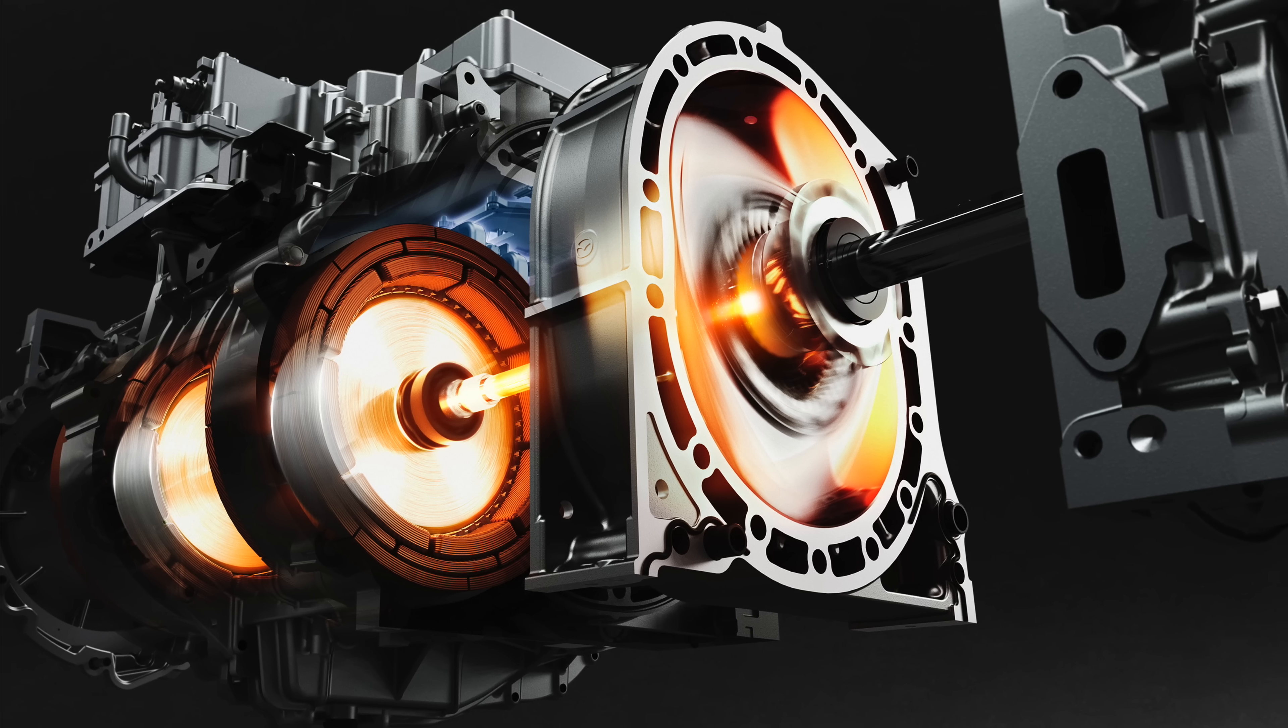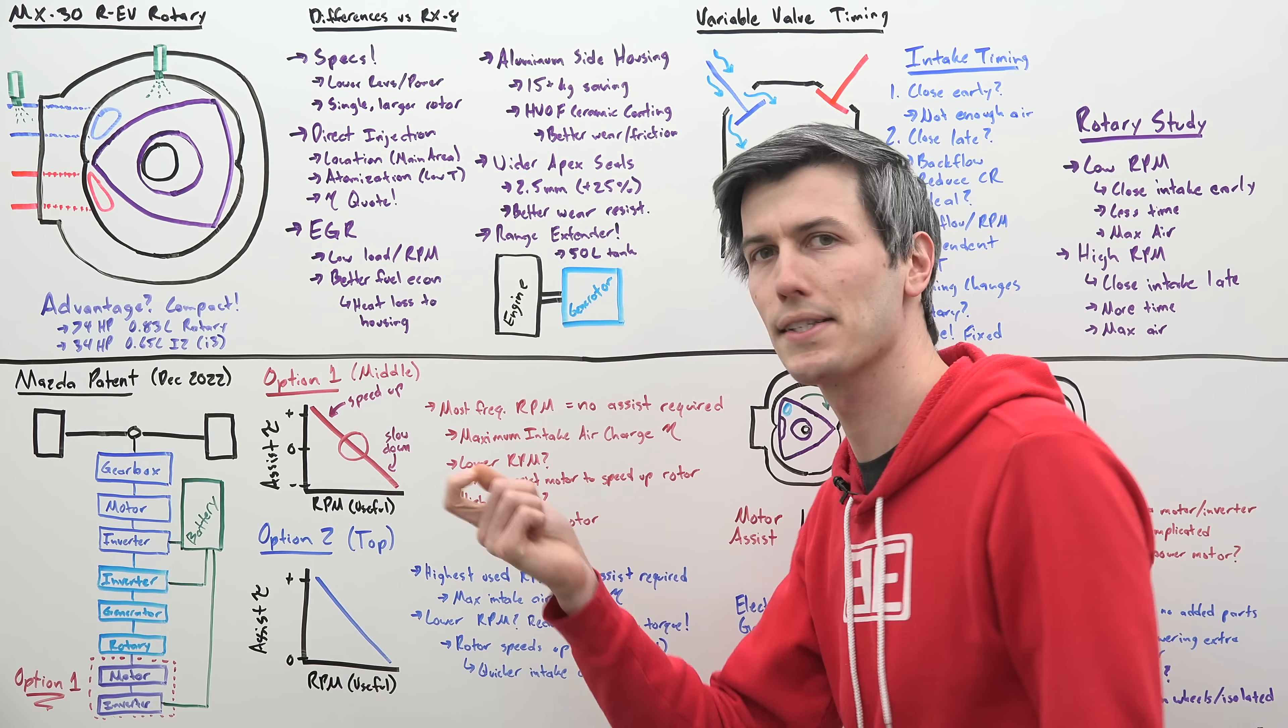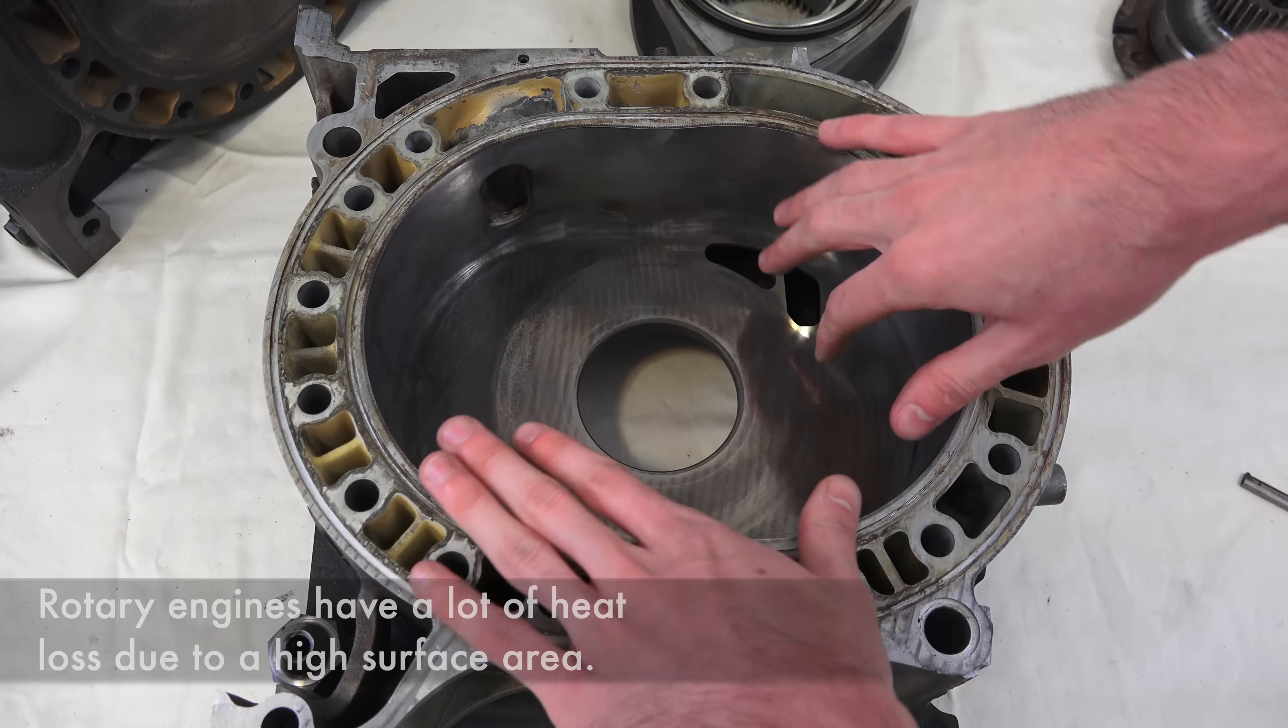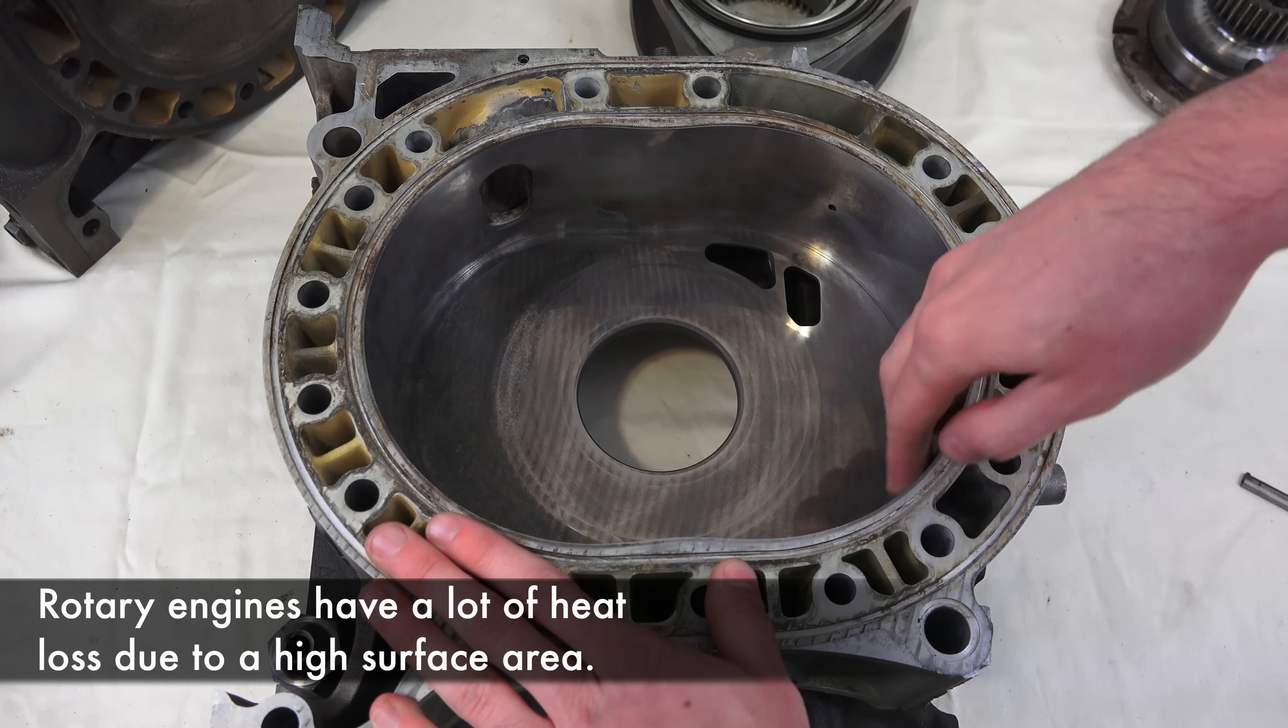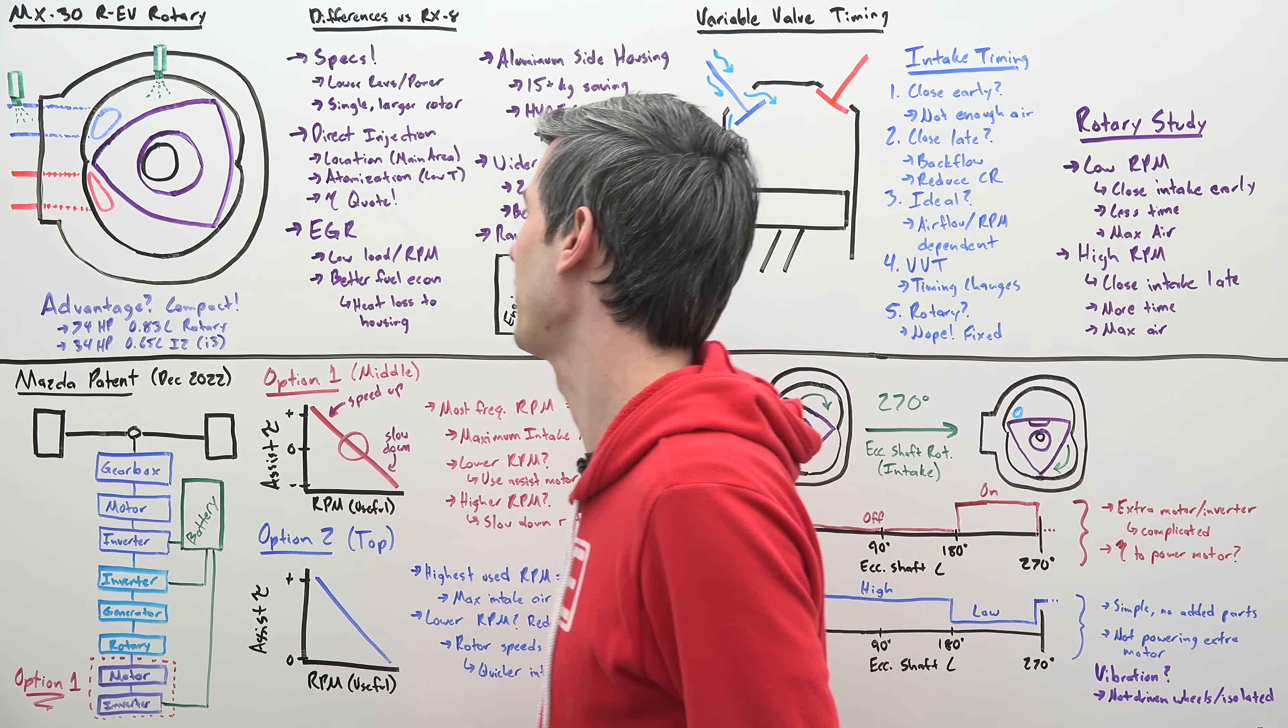The new engine is also now using exhaust gas recirculation which Mazda says helps with efficiency at low loads and low RPMs because it helps contain some of the heat within this engine. So rotary engines inherently have a lot of heat loss because of so much surface area within this rotor housing and so they say using EGR they can help reduce some of that heat loss.